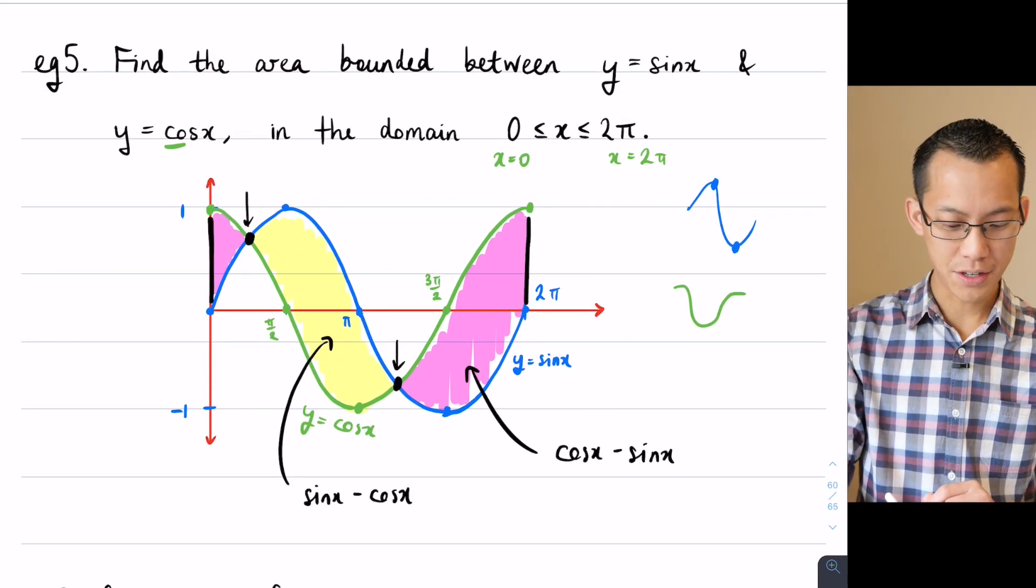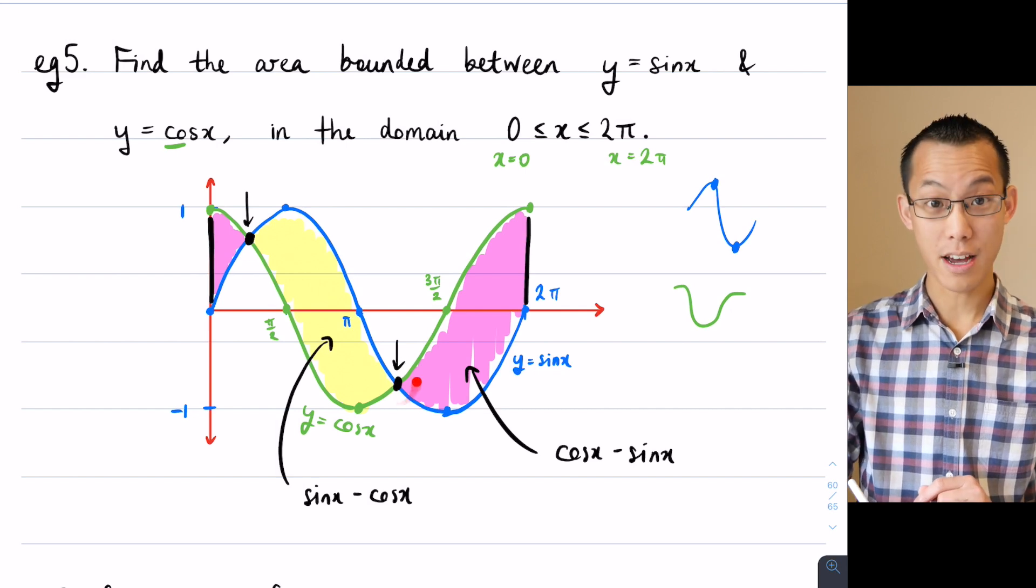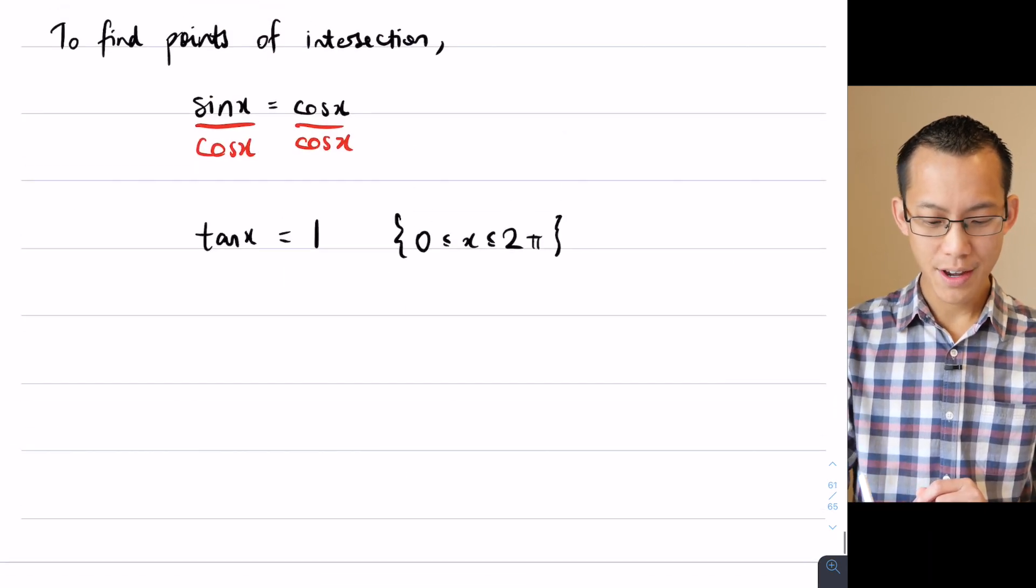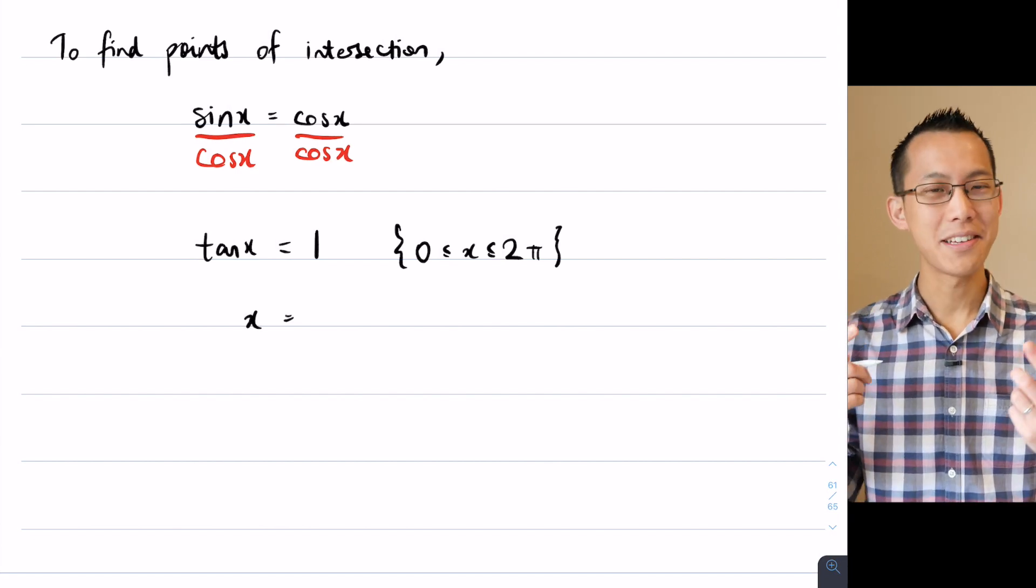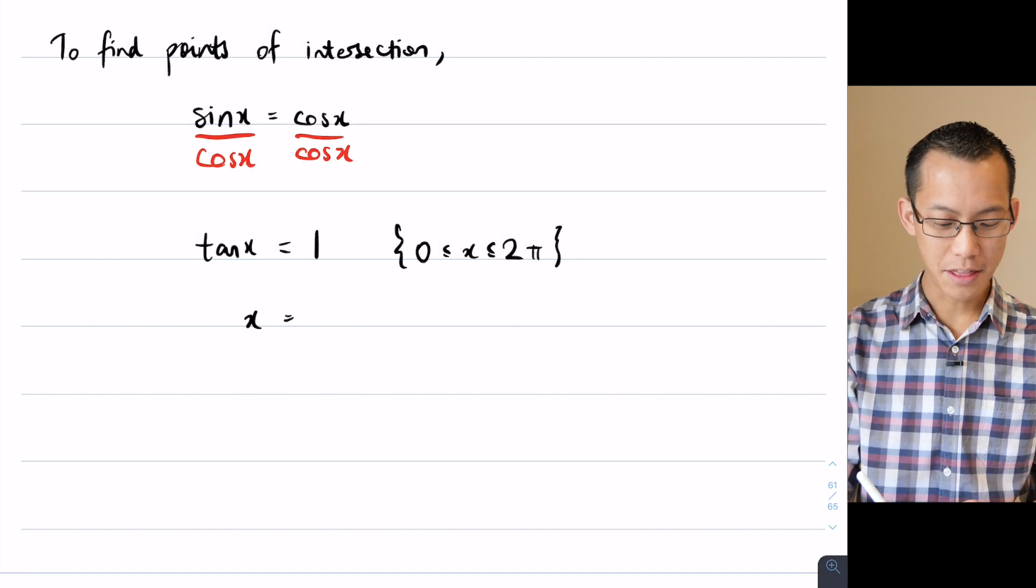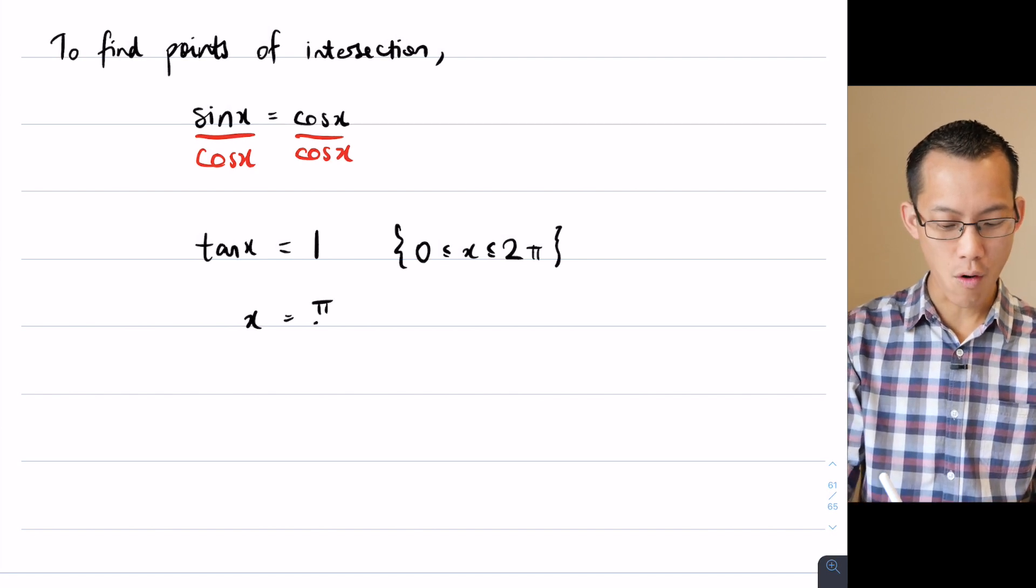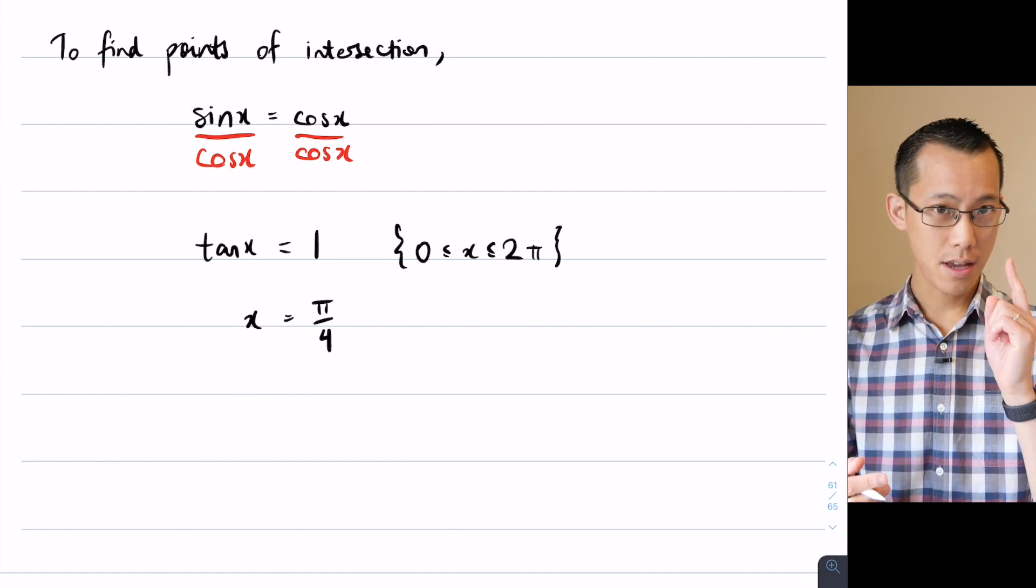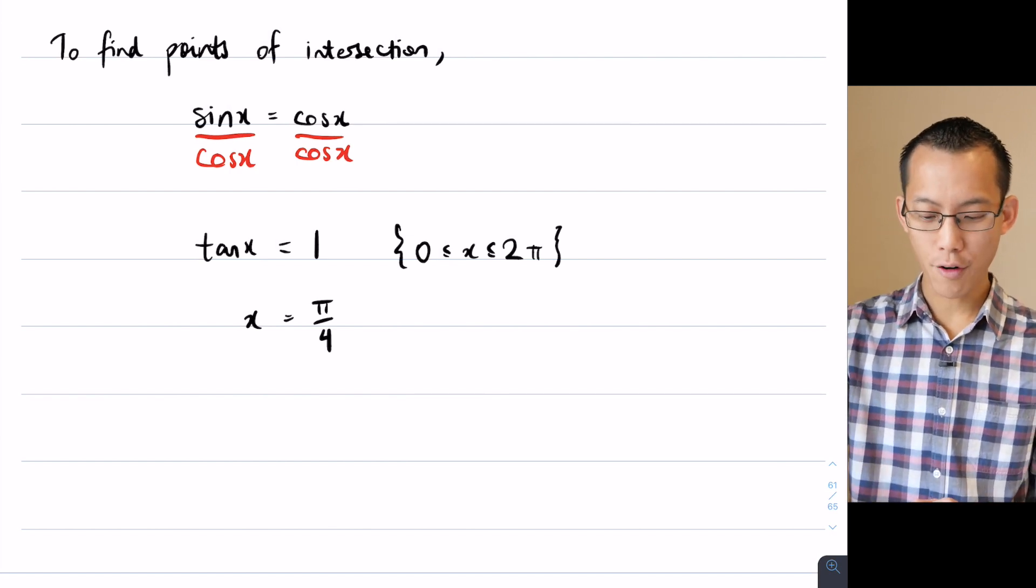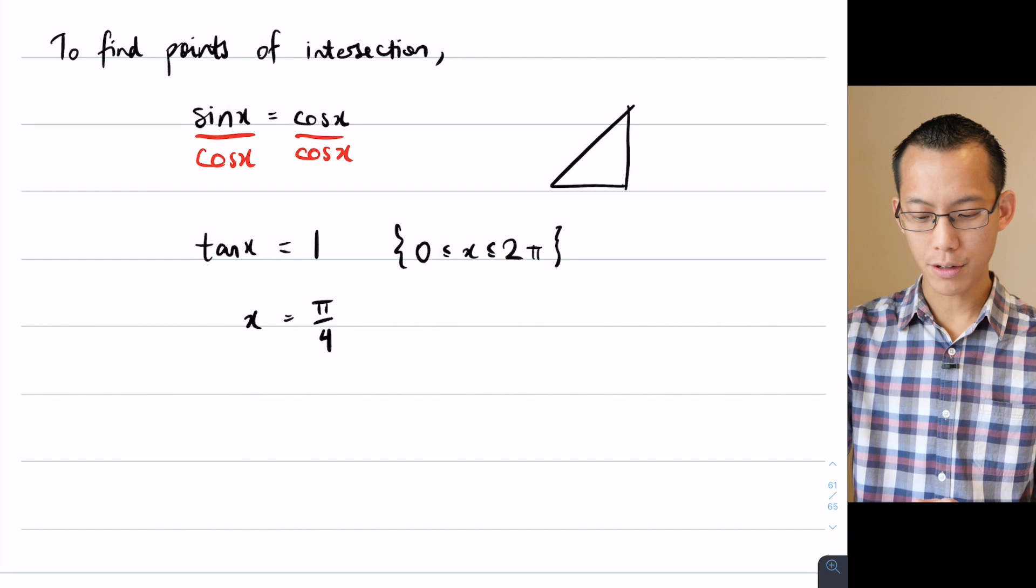I'm expecting this guy over here and also this guy over here. Well, I know from my knowledge and familiarity with exact values that the one I'm looking for here is π on 4. You might remember that better as 45 degrees. Tan of 45 degrees is 1. You can get that from this triangle which you might recall.